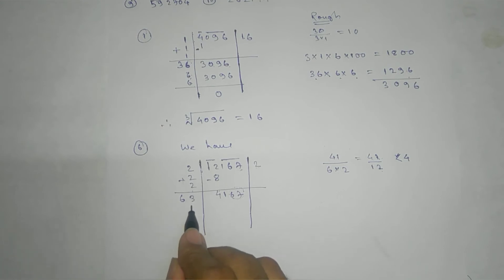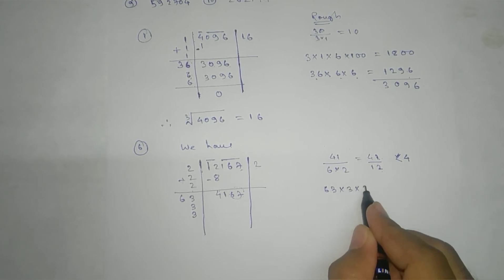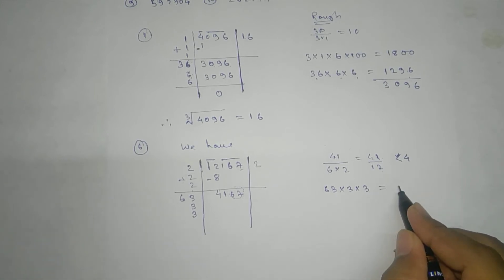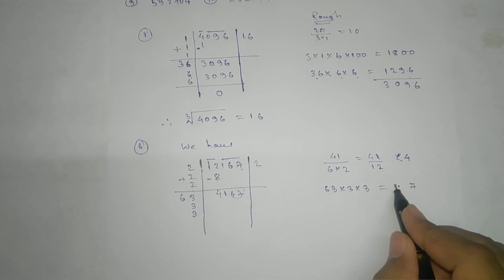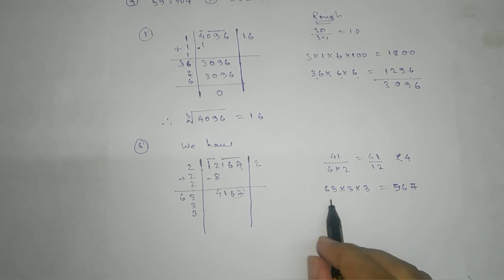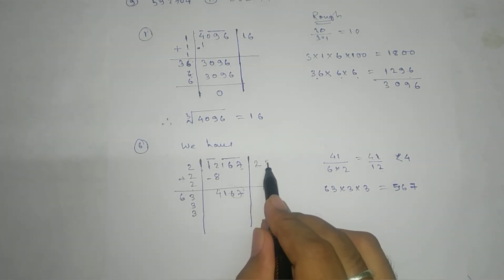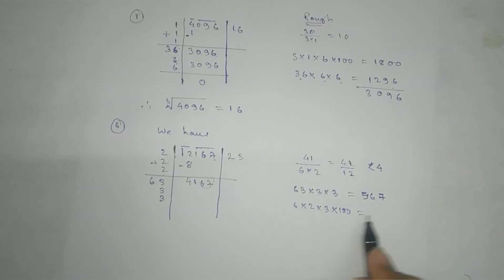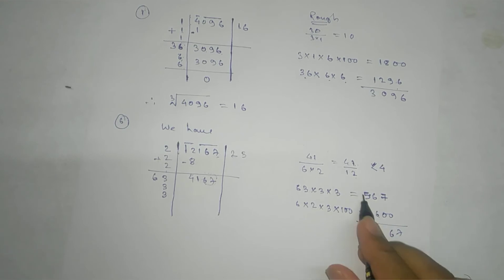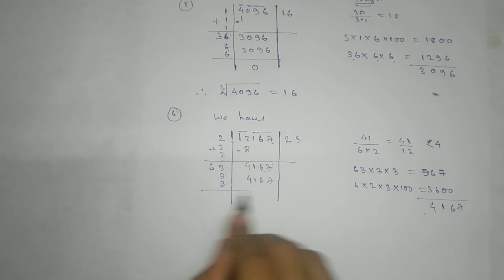If we take 3, then we go with 63 into 3 into 3. The result we get: 9, 57, and 56. Next, we multiply 6 into 2 into 3, and 100. So here: 36 and 20 — add them: 7, 6, 11, 4. You can see 4167.